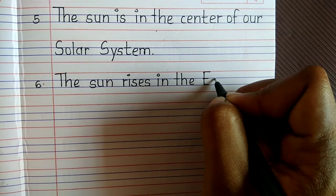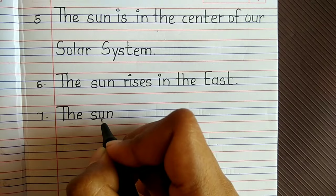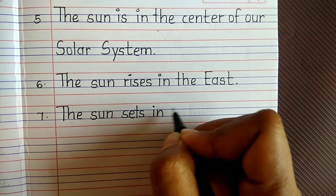Sixth point, the Sun rises in the east. Seventh point, the Sun sets in the west.